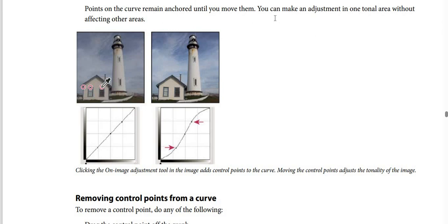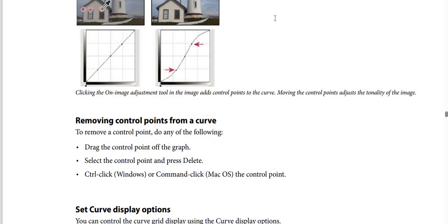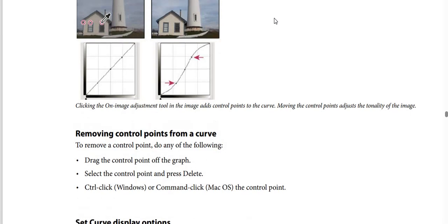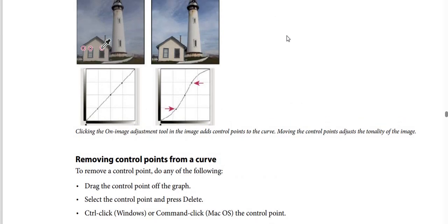The screenshot shows how clicking the On Image Adjustment tool in the image adds control points to the curve, and moving the control points adjusts the tonality of the image. To remove control points from a curve, do any of the following: drag the control point off the graph; select the control point and press Delete; or Ctrl-click (Windows) or Command-click (macOS) on the control point.